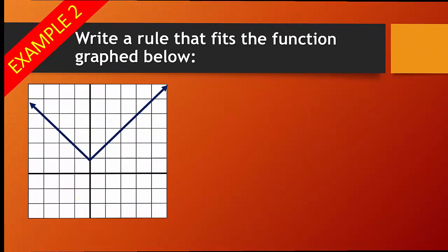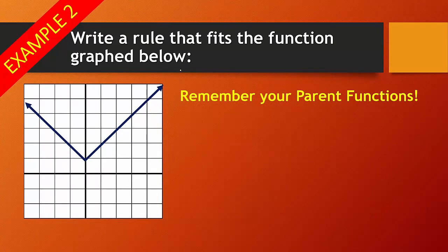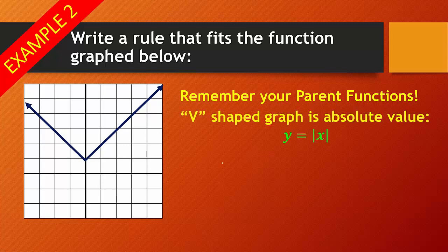Alright. So write a rule that fits the function graphed below. Well, if you take a look at the graph, remember your parent functions. It's a v-shaped graph, so it has absolute value. So this is what we're starting with, is this parent function. And then we're going to make changes based on how the graph is modified or different from our parent function.